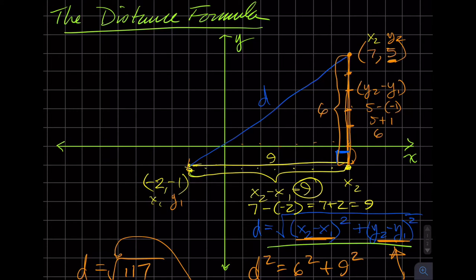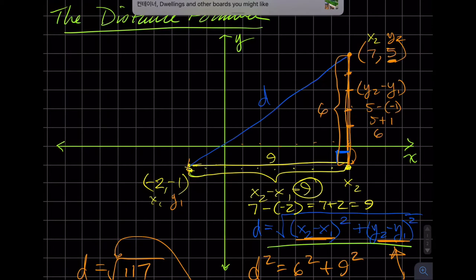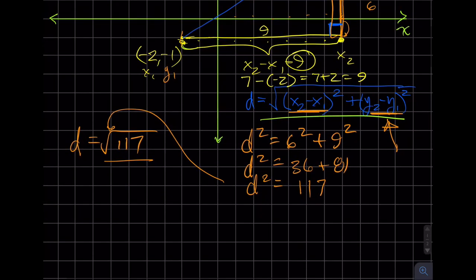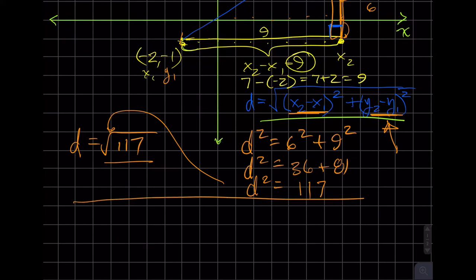The question I have, because we're going to go into slope in a second, is: does it matter which value you choose as x's and y's? Does it matter which values you choose as x's and y's? So I'm going to do this calculation again, but I'm going to choose the yellow point, the left one, as my x₂ and y₂.